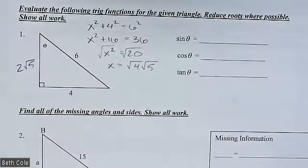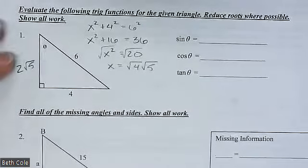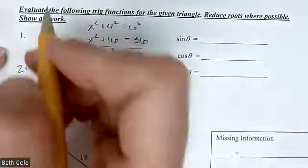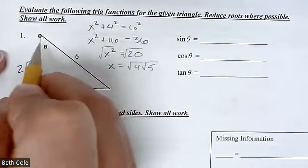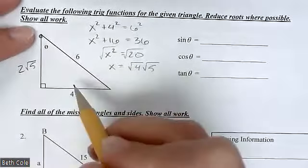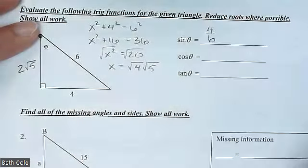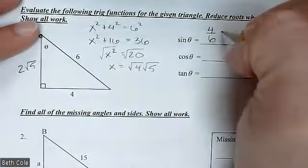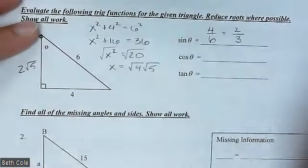Some people were already saying 2√5, so I think that was right. This is your point of view because this is the one that's labeled — that's your theta, that little angle. Sine is opposite over hypotenuse, so that would be 4 over 6, which reduces to 2/3.